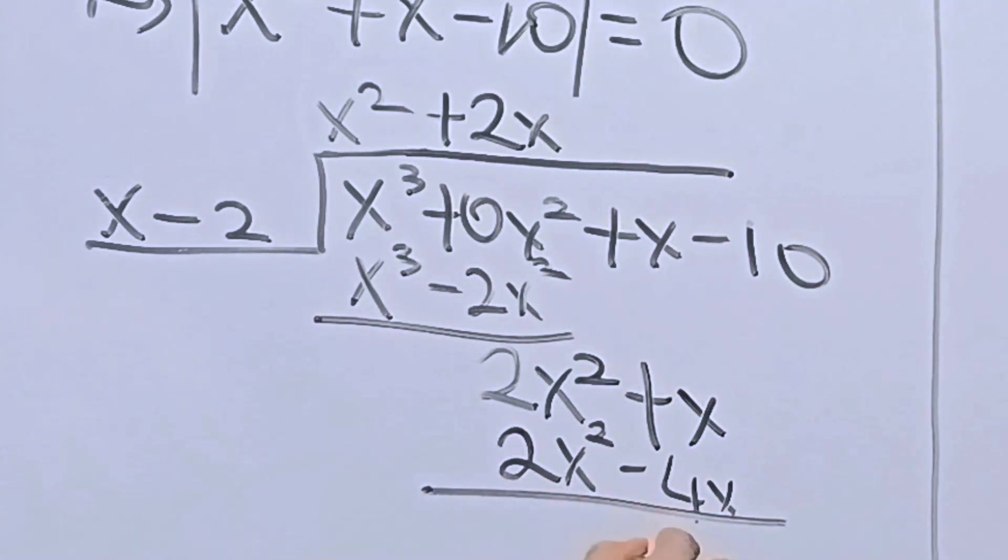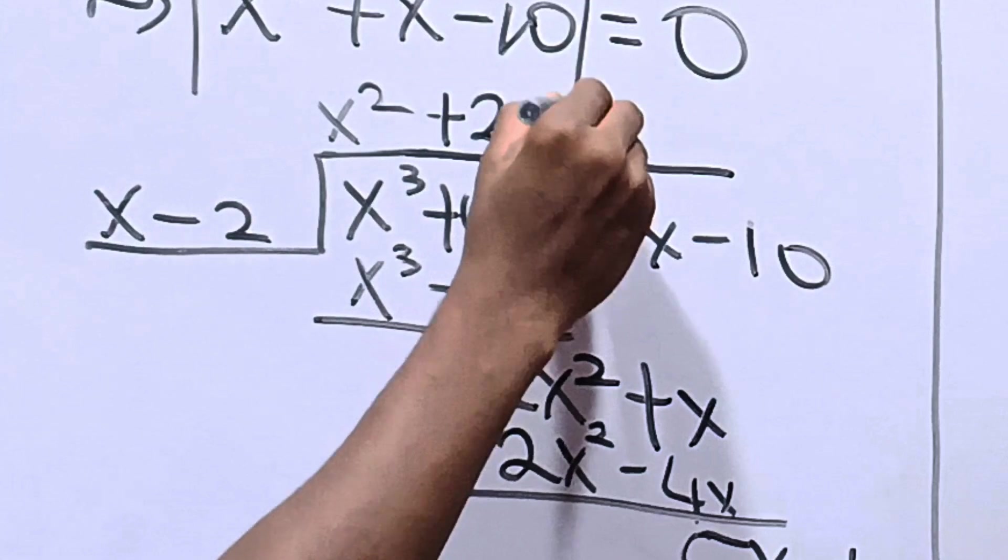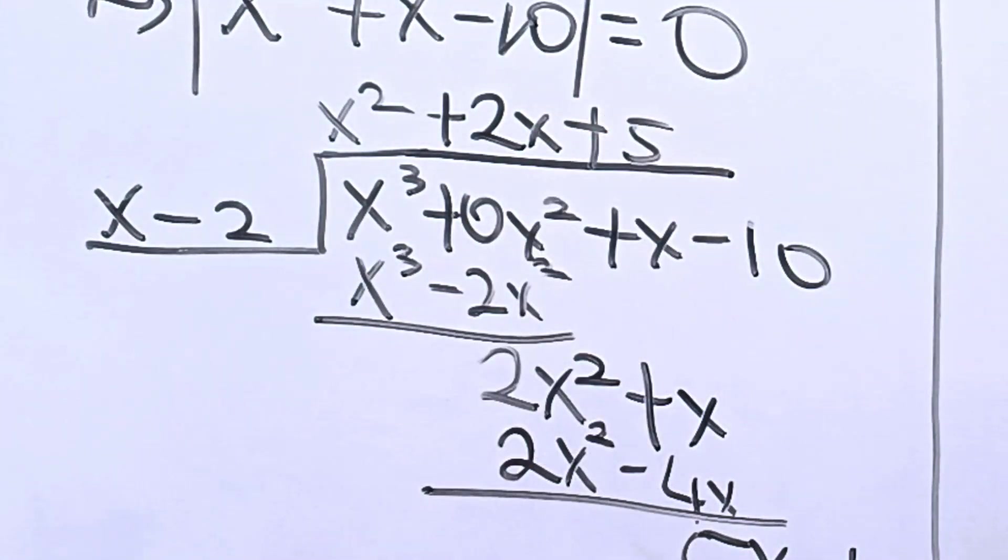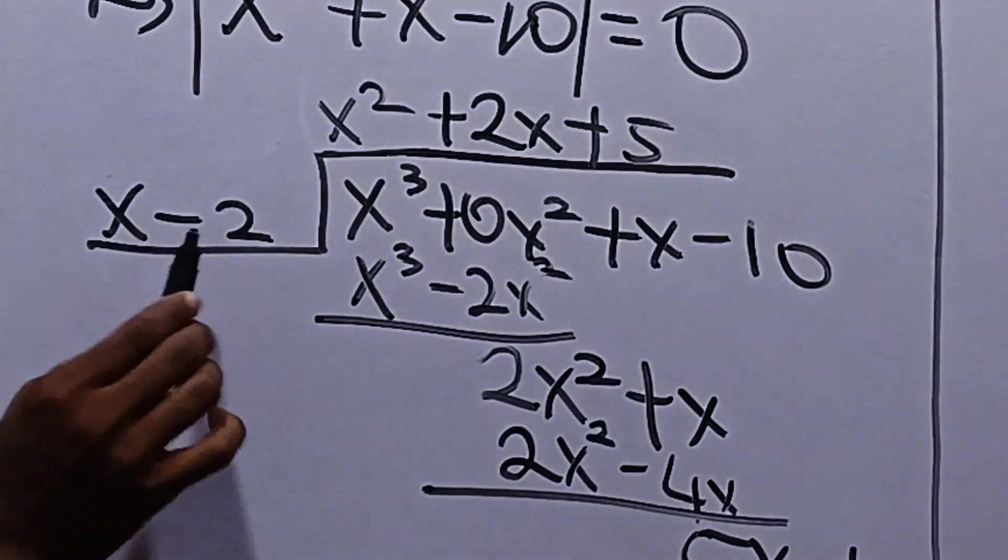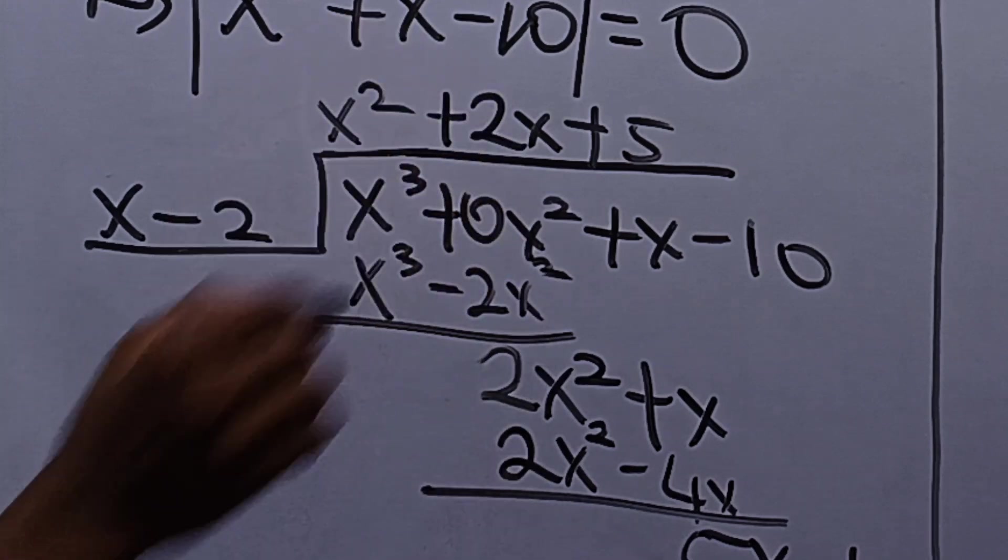Subtracting again, we have 5x minus 10. Then, dividing, we have plus 5. Hence, we have x minus 2 into x squared plus 2x plus 5.